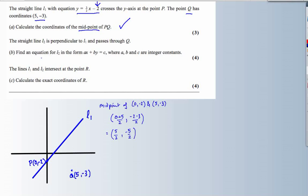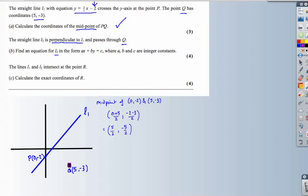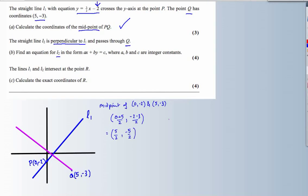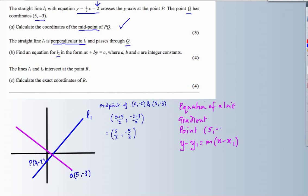My next task is to find line L2, which passes through Q and is perpendicular to L1. Let's see if I can just add this to my diagram — something of this sort. As soon as I want to find the equation of a line, I need a couple of things: the equation of a line requires me to always know a gradient and always know a point. I've got a point — I've got point Q, that's an easy one.